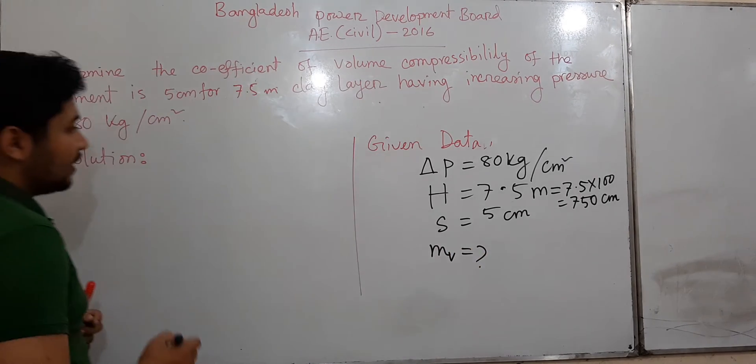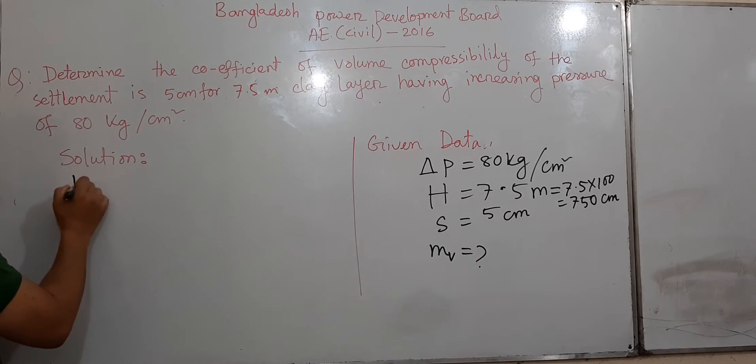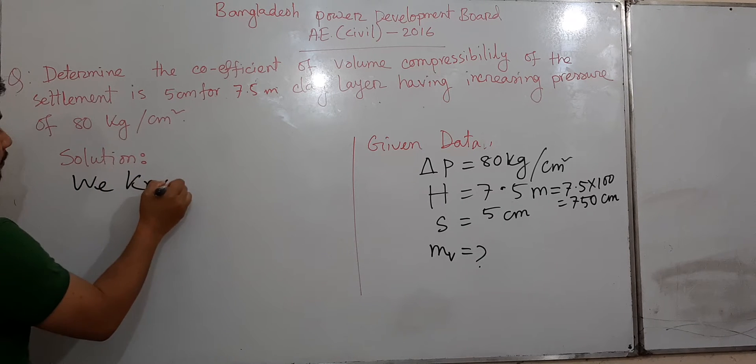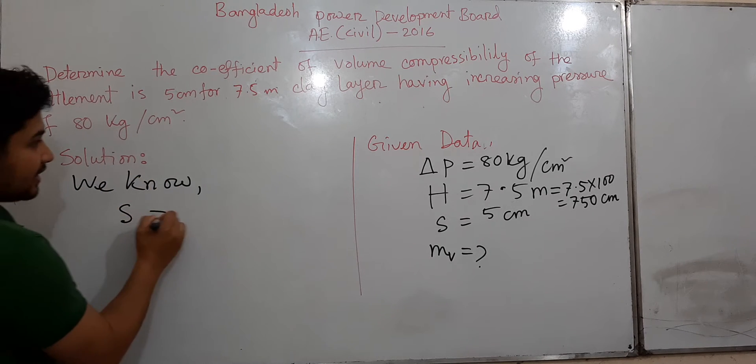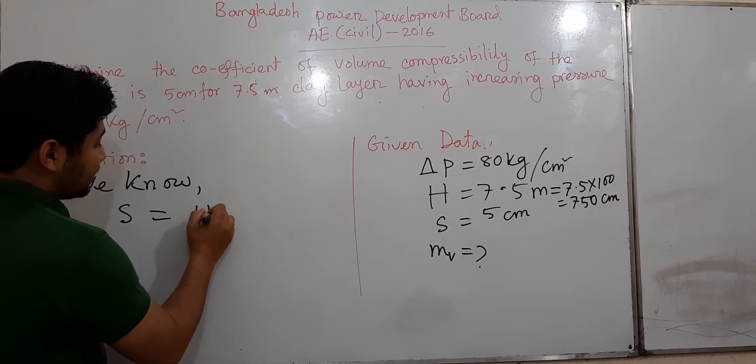We know the settlement formula: S equals H times ΔP times m_v.